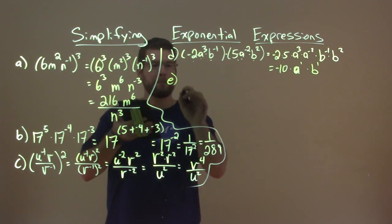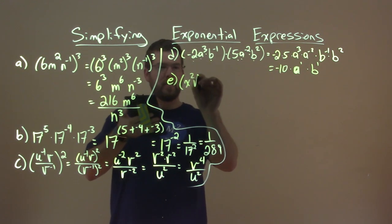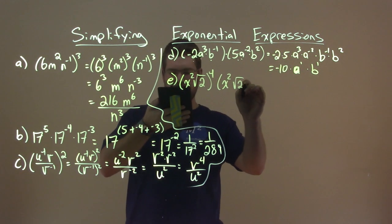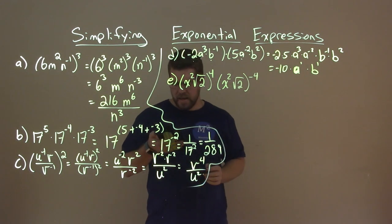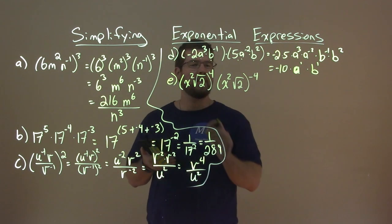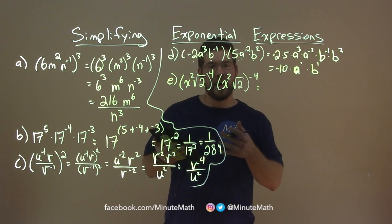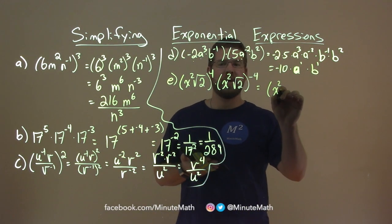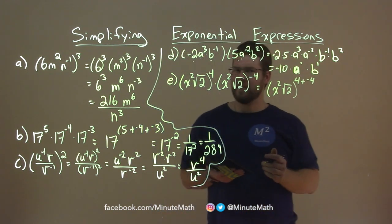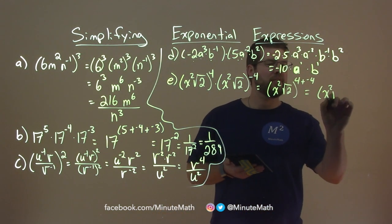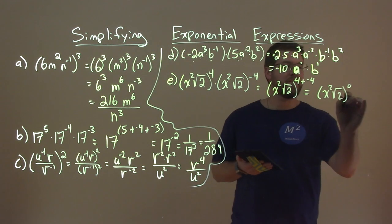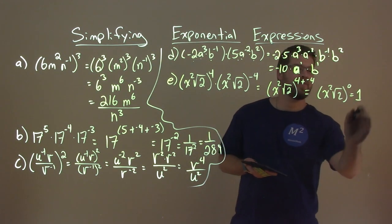Let's keep going — we have e. x squared square root of 2, all to the fourth power, times x squared square root of 2 all to the negative 4 power. This one is a little tricky. We notice we have the same base — x squared square root of 2. So we add the exponents for multiplying: x squared square root of 2, all to the exponent 4 plus negative 4. Well, 4 plus negative 4 is 0 — x squared square root of 2 to the 0 power. And anything to the 0 power is just 1. And there we have our answer — it came out to be an easy 1.